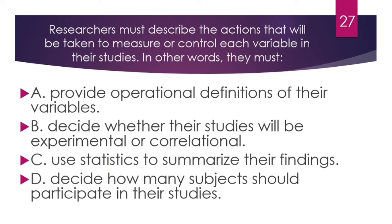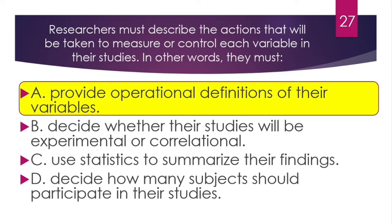Question number 27. Researchers must describe the actions that will be taken to measure or control each variable in their studies. In other words, they must provide operational definitions of their variables. These go beyond conceptual definitions to specify exactly how each variable is measured or controlled.